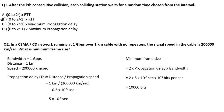The minimum frame size formula is: 2 × propagation delay × bandwidth. We need to find the propagation delay first. Propagation delay = distance / propagation speed. Distance is 1 km and propagation speed is 2 lakh km per second, so propagation delay = 1 / 2 lakh.